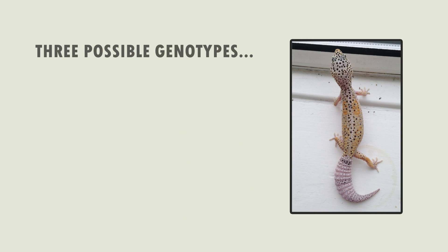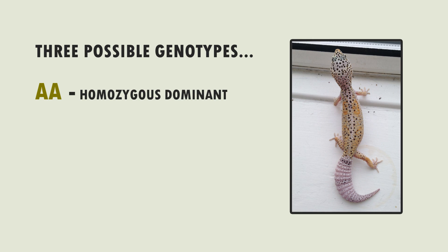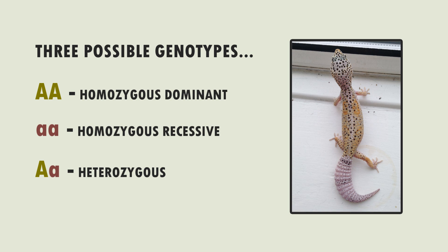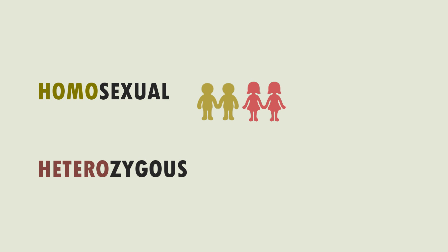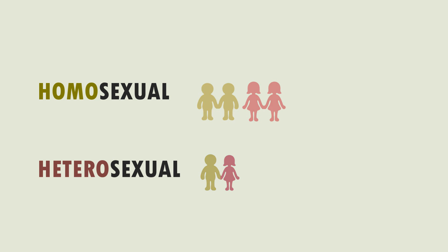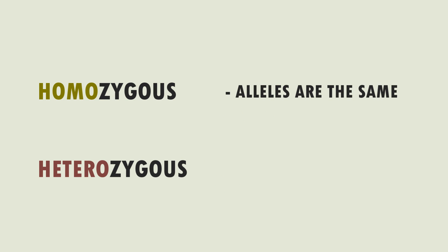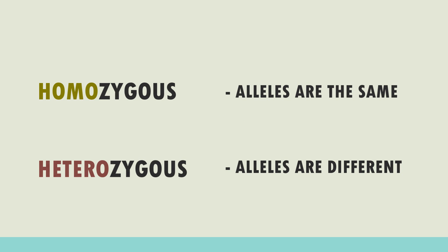Based on this, a leopard gecko can have three possible genotypes: two capital A's which is homozygous dominant, two lowercase a's which is homozygous recessive, and one capital A and one lowercase a which is heterozygous. An easy way to remember the difference: if someone's homosexual they like someone of the same sex, and if someone's heterosexual they like someone of the opposite sex. So homozygous is where two alleles are the same, whereas heterozygous is where two alleles are different.